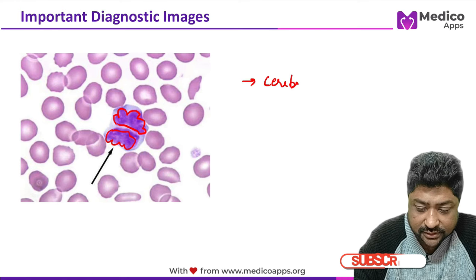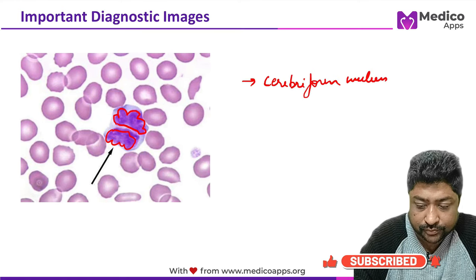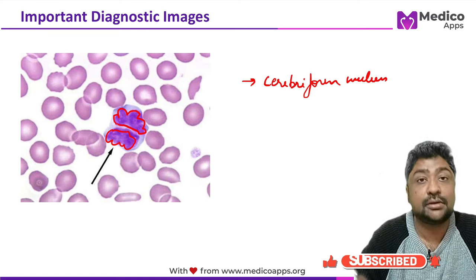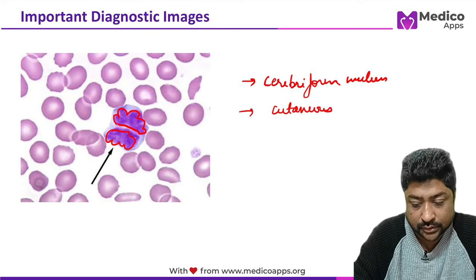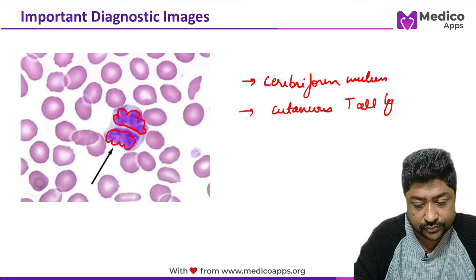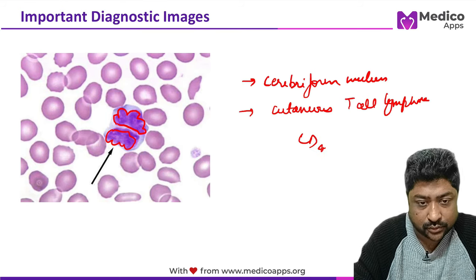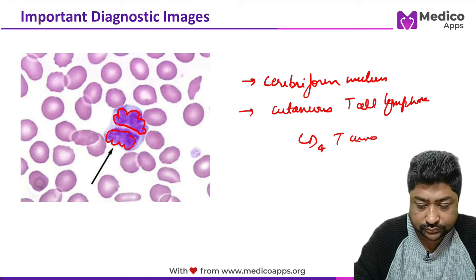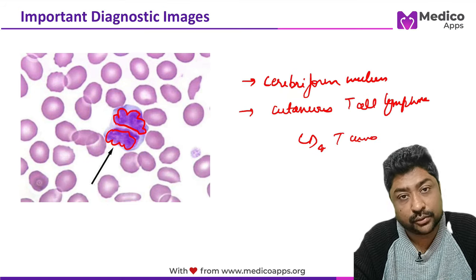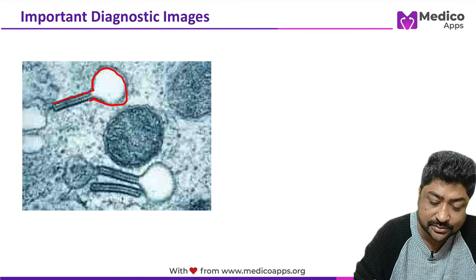The next image shows a cerebriform nucleus — meaning it resembles the convolutions of the brain. This is seen in cutaneous T cell lymphomas, which are CD4-positive tumors. The cerebriform nucleus image has been asked multiple times in examinations.